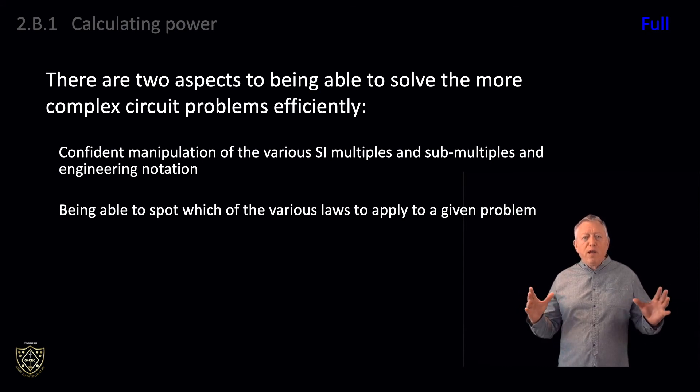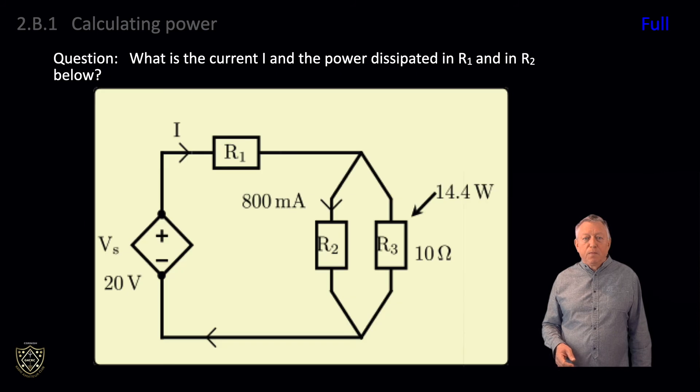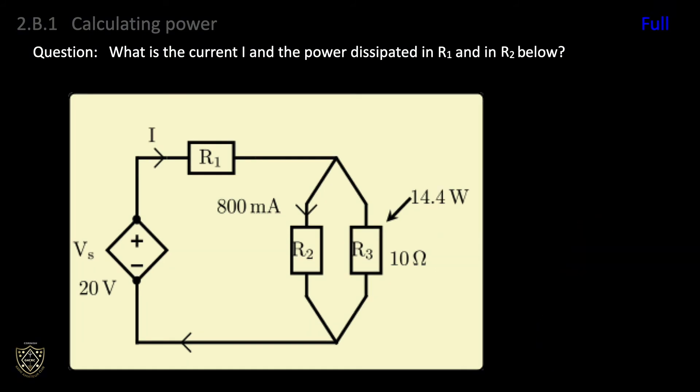Let's do a question that brings it all together. What is the current I and the power dissipated in R1 and R2 below? At first glance this may seem a tall order, but it's simply a matter of building up a picture in steps from what we know. With R3, we are given both the power and the resistance. This is a classic 2 from 3 problem where we can use formulas we discussed earlier to determine either the voltage across R3 or the current through R3. Let's determine the voltage.